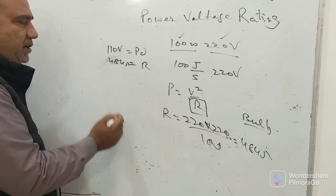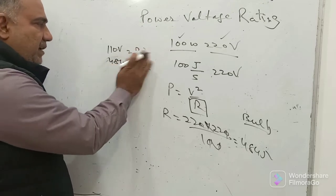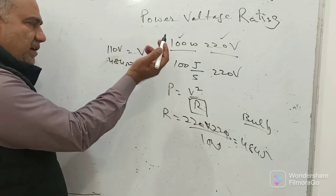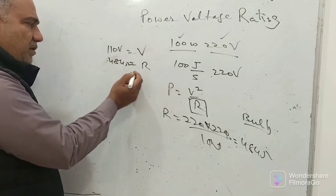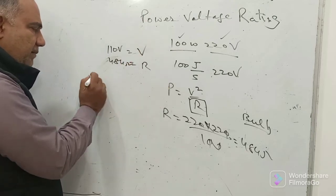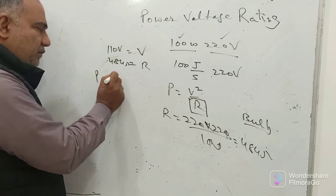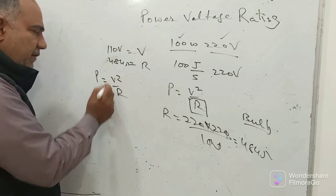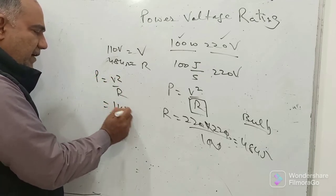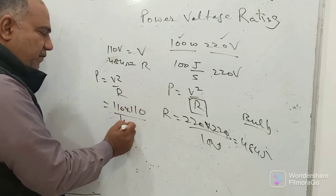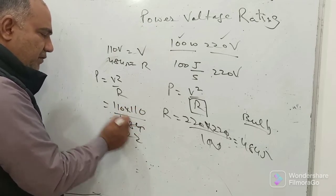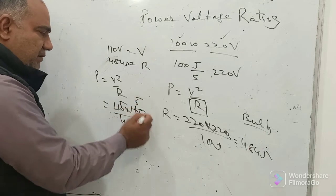Let us see how much power it will consume. So once again we say V squared upon R. Now if you see this will become power is equal to V squared upon R, so it will become 110 times 110 divided by 484. If you strike it out, this will become 25 watt.